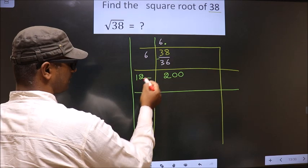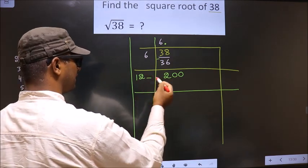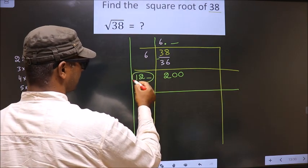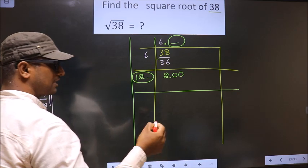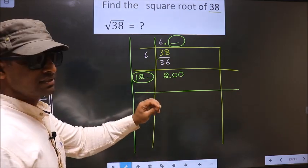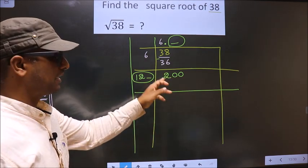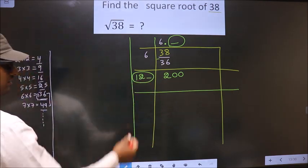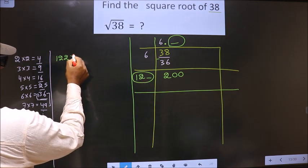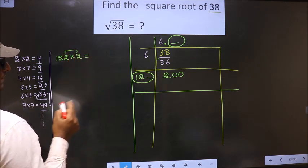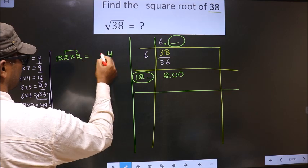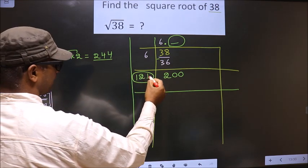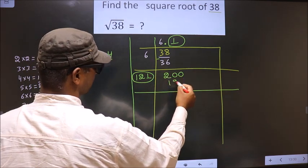Now I have to write a number here. The condition is: whatever number I write here, I should also write the same number in the divisor. And when you multiply this number by the full divisor, the resulting number should be either equal to or smaller than the dividend, but should not be larger. If I take 2, then 122×2=244, which exceeds 200. So you can't take 2. You directly take 1. So 121×1=121.